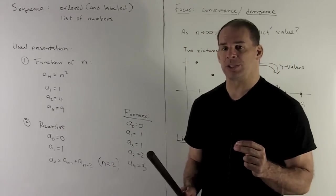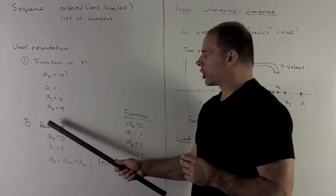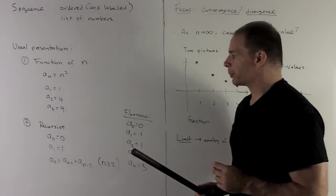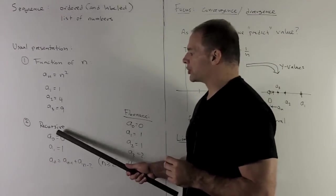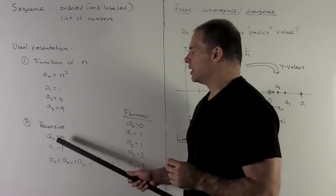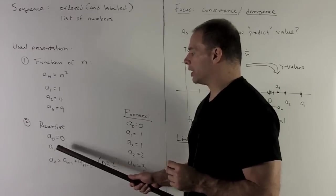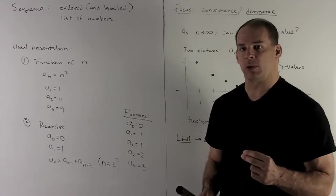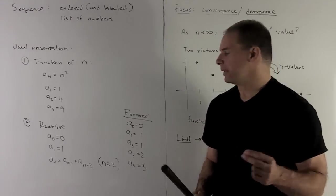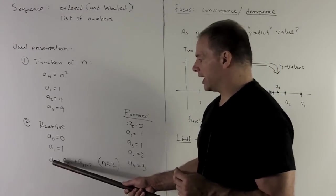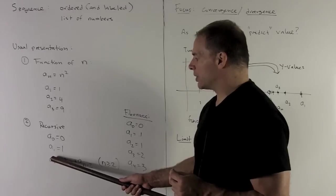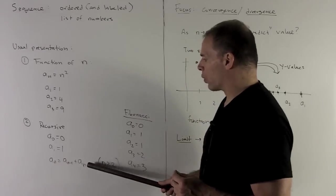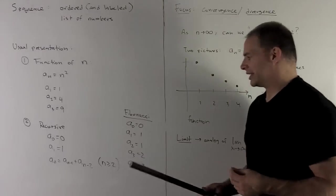Another way to define sequences, we'll have recursively defined sequences. So here, I would start off with some initial values. So a0 equals 0, a1 is equal to 1, and then we're going to have a rule that tells us how to create the next element in the sequence from the ones before it. So in this case, our rule says, to get the next one in the sequence, add together the two before it.